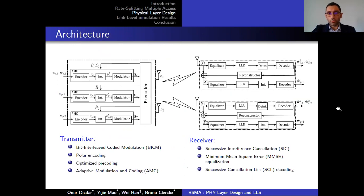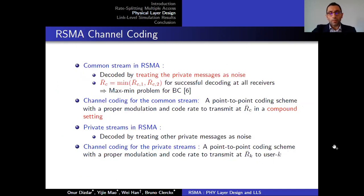This is the architecture we propose for RSMA for the two-user scenario. At the transmitter, we use bit-interleaved coded modulation with polar encoding. We use optimized precoders and an adaptive modulation and coding algorithm to select appropriate modulation schemes and coding rates. At the receiver side, we use an SIC receiver with MMSE equalization and successive cancellation list decoding for polar codes. The common stream in RSMA is decoded by treating the private messages as noise, and the rate of the common stream is the minimum rate across users to ensure successful decoding at all receivers. A point-to-point coding scheme with proper modulation and code rate is used to transmit at rates close to the compound channel capacity.